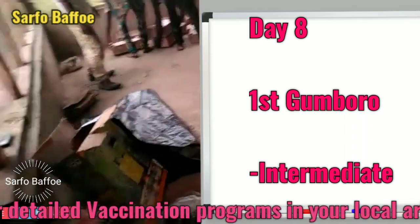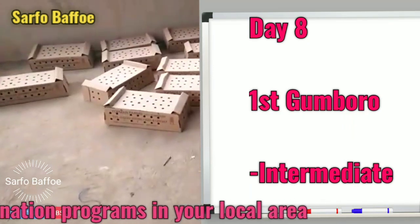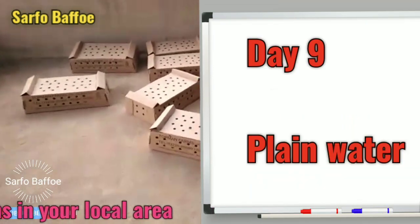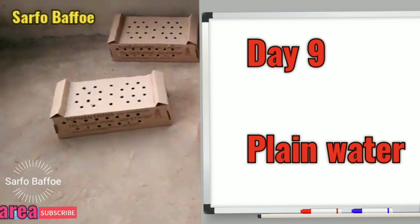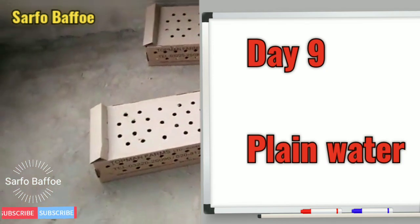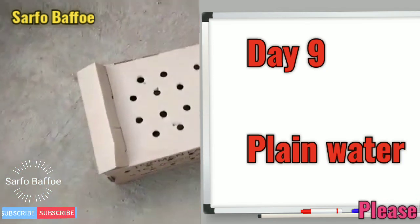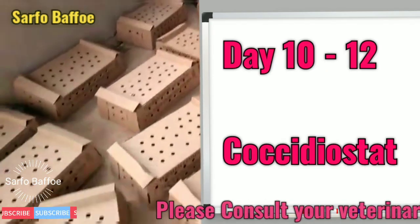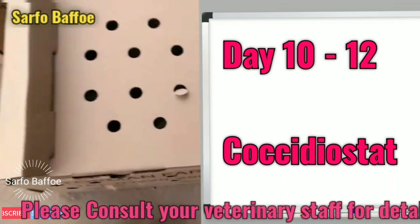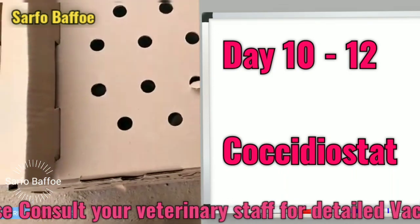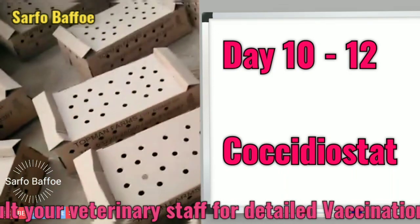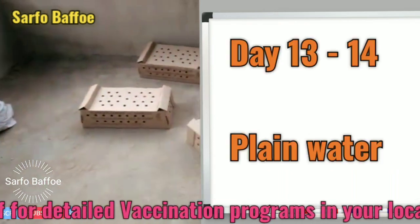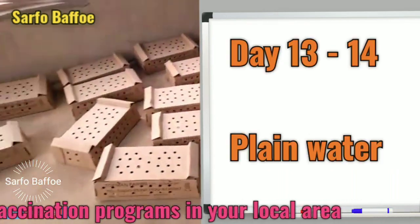On day 8, that is the first week, we give them the first Gumboro intermediate vaccine. Note that every area has its own vaccine schedule, so consult your veterinary officers in your local area. On day 9 we give them plain water. On day 10 to day 12 we give them Cocydial Stat, which is medicine for coccidiosis.